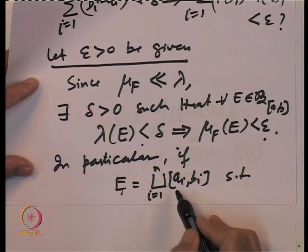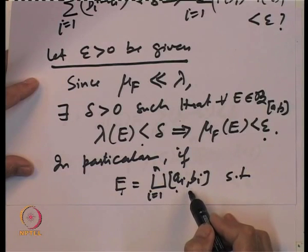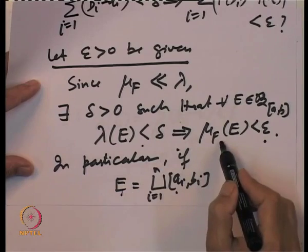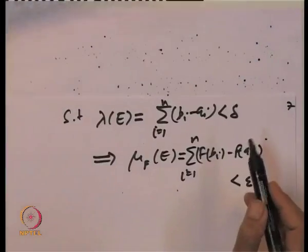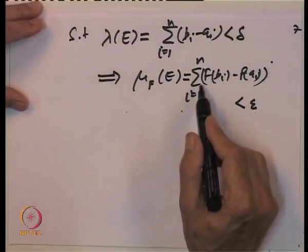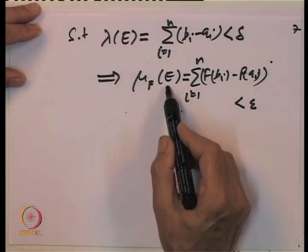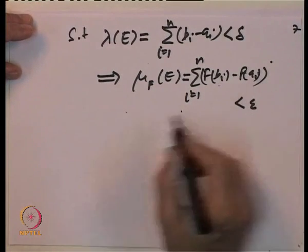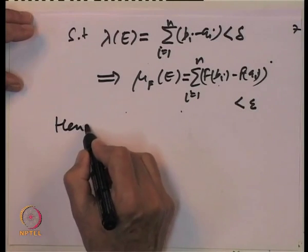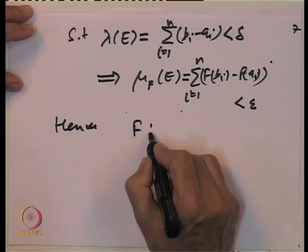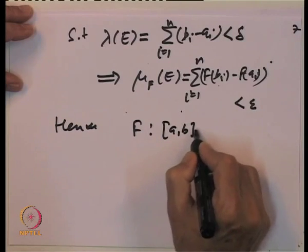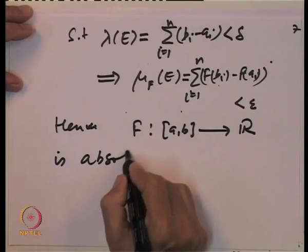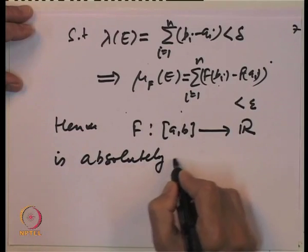In particular, if E is a finite disjoint union of intervals (a_i, b_i) inside [A, B] such that lambda of E, which equals the sum of (b_i minus a_i), is less than delta, then mu_F of E, which is nothing but the sum of F(b_i) minus F(a_i) for i from 1 to n, is less than epsilon. Hence this proves that F on [A, B] to R is absolutely continuous.